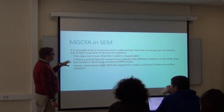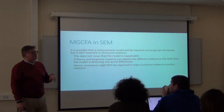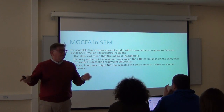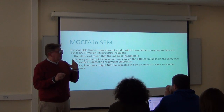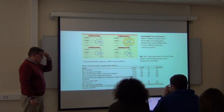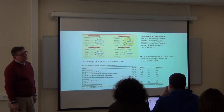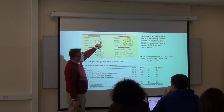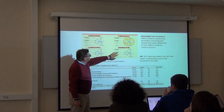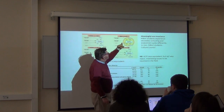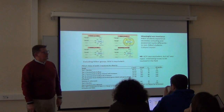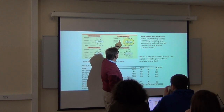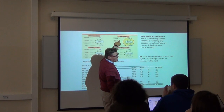If theory and empirical research can explain the different relations, then the model is detecting real-world differences. Here's an example from a study my colleague and I published in 2009. The model showed the relationship of one factor to another was invariant for three groups, but for the fourth group it was not invariant. Three groups behaved the same way, but in the fourth group these two factors were highly correlated — and with N=474, it's not a sample size problem.